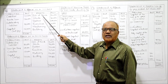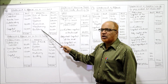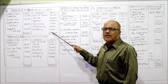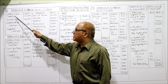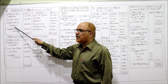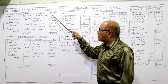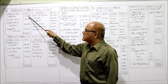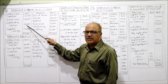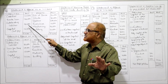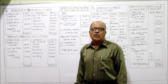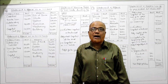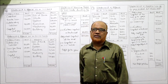Statement of affairs on 1st January 2008 — beginning of the year. Assets taken: cash at bank, stock, debtors, furniture, machinery, and building — all values from the problem. Three liabilities: creditors, bank loan, and outstanding expenses. Total assets 5,16,000. Deduct liabilities of 1,45,000, 1,20,000, and 90,000. Balancing figure — opening capital — is 1,61,000.